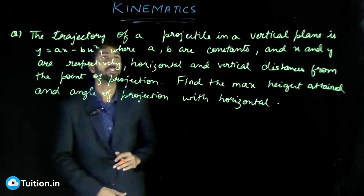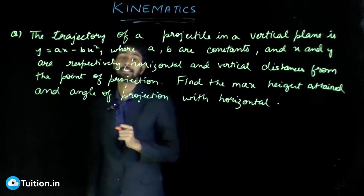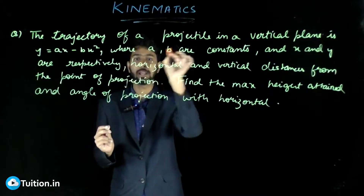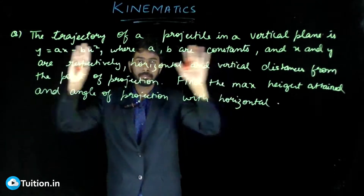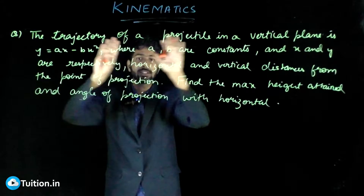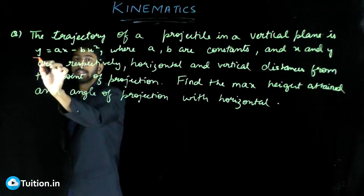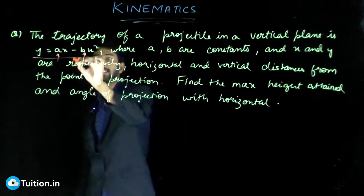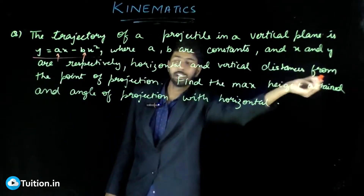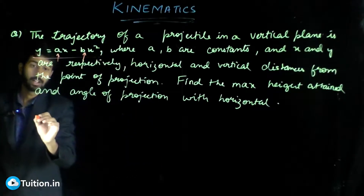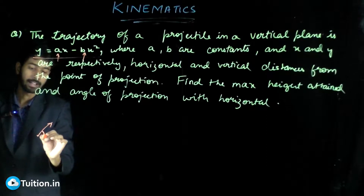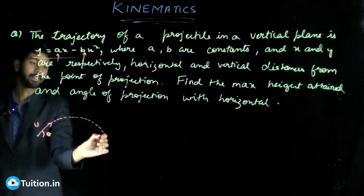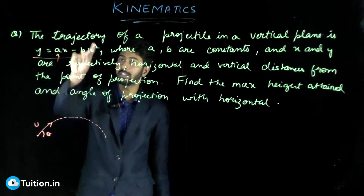Let's look at this problem from the topic kinematics. It says the trajectory of a projectile in a vertical plane. The ground is the horizontal plane and the vertical plane is shown here. In the vertical plane, the trajectory is given by this equation where a and b are constants and x and y are respectively the horizontal and vertical distances from the point of projection. The projectile is launched at angle theta with velocity u, following a parabolic path whose equation is given.